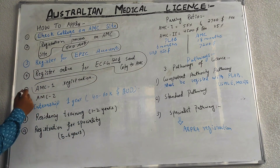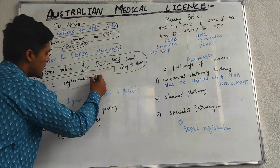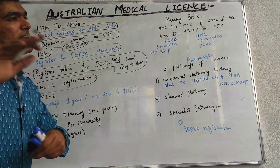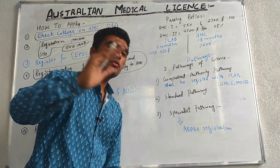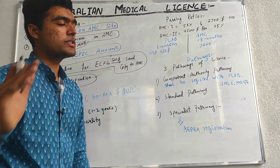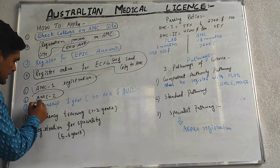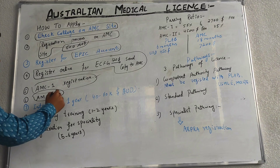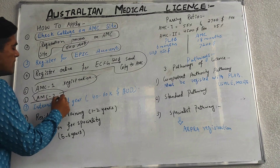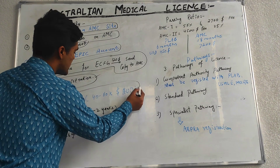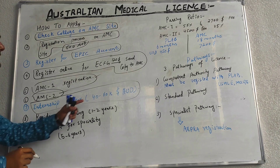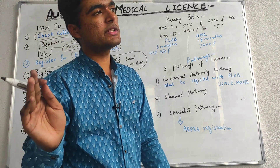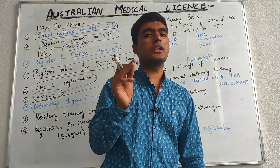After completing those steps, you are eligible to register for AMC Step 1. After passing AMC Step 1, you register for AMC Step 2 in the same way. After passing AMC Step 2, you will complete one year of house job, with a salary of 40,000 to 60,000 Australian dollars.